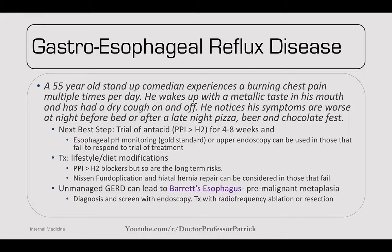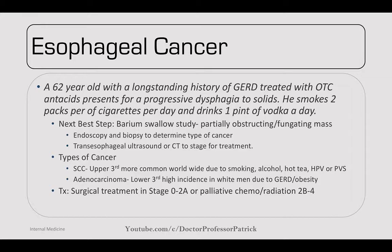Esophageal cancer — a 62-year-old with long-standing GERD treated with OTC antacids presents with progressive dysphagia to solids. He smokes two packs per day and drinks one pint of vodka per day. Next best step: barium swallow — look for a partially obstructing or fungating mass. Endoscopy and biopsy confirm the type. Transesophageal ultrasound or CT for staging. Squamous cell carcinoma is more common in the upper third, associated with smoking, alcohol, hot teas, HPV, and Plummer-Vinson syndrome. Adenocarcinoma is more common in the US due to high incidence in white men with GERD and obesity. Treatment: surgery for stage 0-2A; palliative chemoradiation for 2B-4.